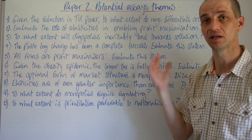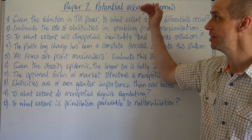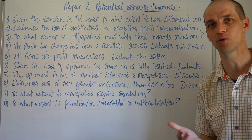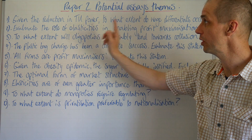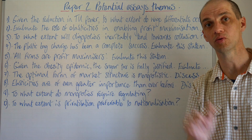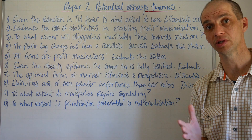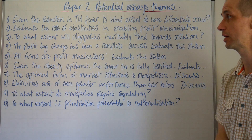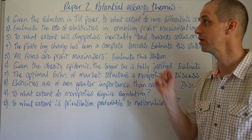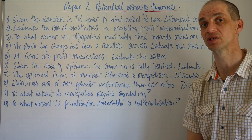Number two: evaluate the role of elasticities in enabling profit maximisation. This is quite a nice question. It asks you to focus on price elasticity of demand — we can derive MC equalling MR on the elastic part of the demand curve, where demand is price sensitive. Revenue maximisation also occurs where price elasticity of demand equals one, so it depends on the firm's objectives. You need to understand those other elasticities to answer this fully.